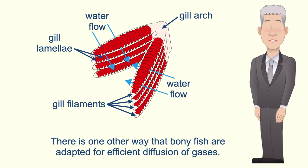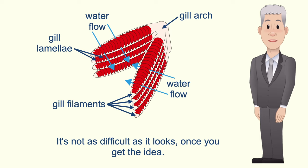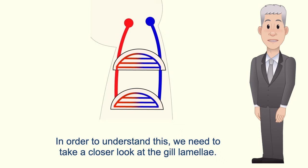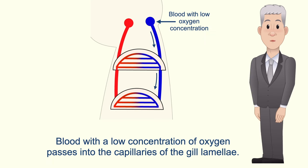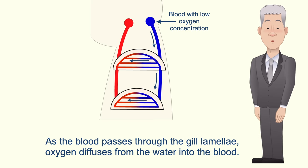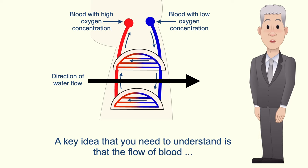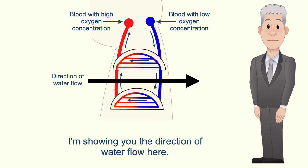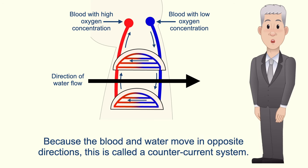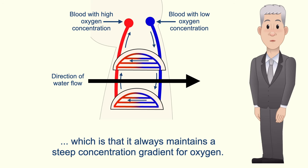There is one other way that bony fish are adapted for efficient diffusion of gases, and that's called a counter current exchange system. In order to understand this we need to take a closer look at the gill lamellae. Blood with a low concentration of oxygen passes into the capillaries of the gill lamellae. As the blood passes through, oxygen diffuses from the water into the blood, and oxygen-rich blood then passes out of the gill lamellae. A key idea is that the flow of blood is in the opposite direction to the flow of water — because the blood and water move in opposite directions, this is called a counter current system. The counter current system always maintains a steep concentration gradient for oxygen.